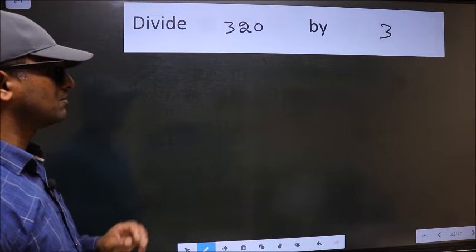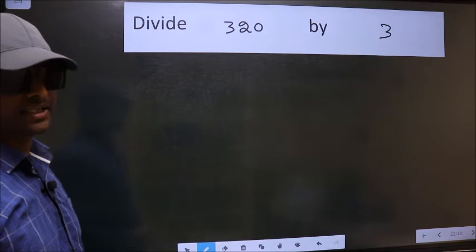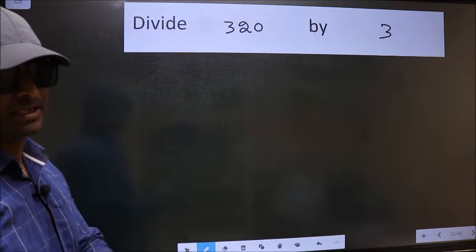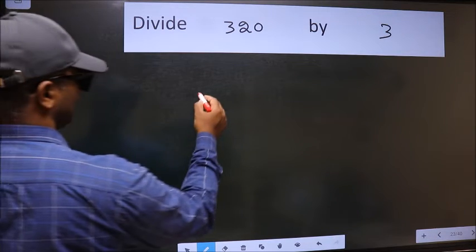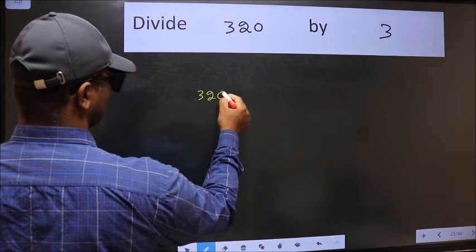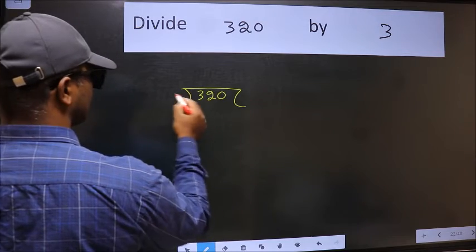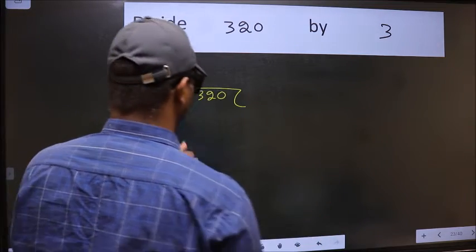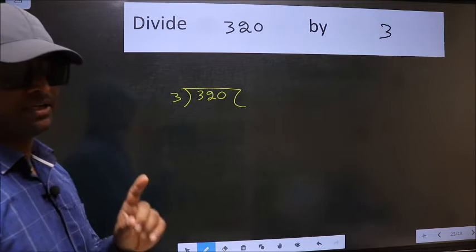Divide 320 by 3. To do this division, we should frame it in this way. 320 and 3 here. This is your step 1.